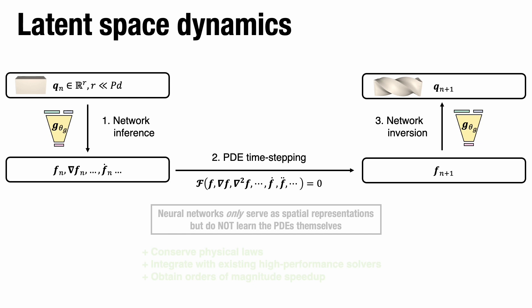To temporally evolve the latent space vector, we first inference the network. We next temporally update the vector field according to the PDE, and lastly, we invert the network.